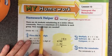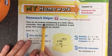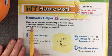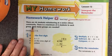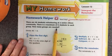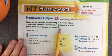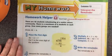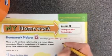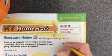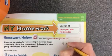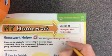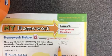There are 46 students volunteering at a senior citizen community. There is a maximum of six students in each group. How many groups are needed? So we're going to do 46 divided by 6. I'll do the division first.